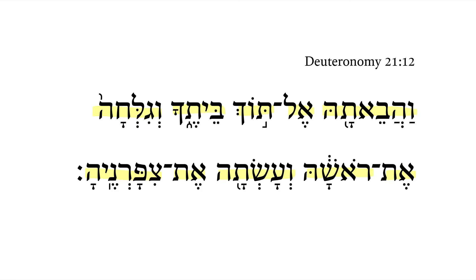We've got here again a vav consecutive on the perfect. This time we're looking at a hiphil perfect, 2ms, of the verbal root bo. Notice we drop the middle vav, and in the hiphil we get the sere thematic vowel because of the third aleph.